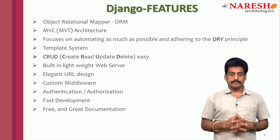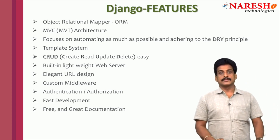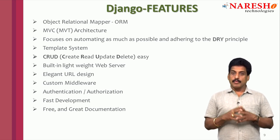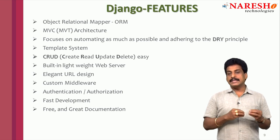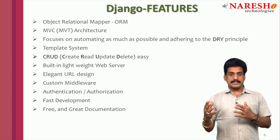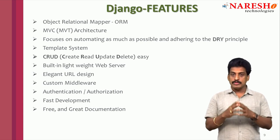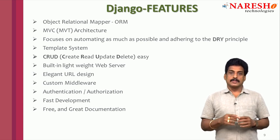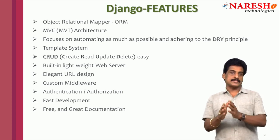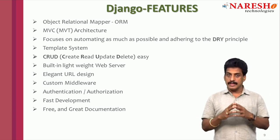Feature number one: ORM, Object Relational Mapper. It is completely related to Python classes. Model is one of the components of the MVT pattern, used to indicate back-end capacity. The model is the most essential component for indicating the back-end. ORM represents the back-end using Python classes.